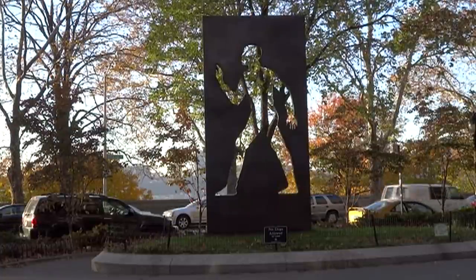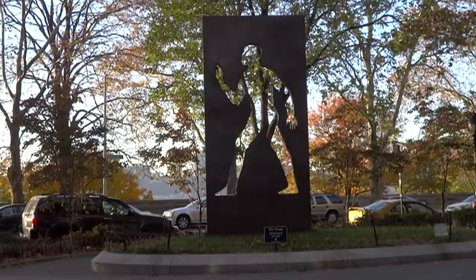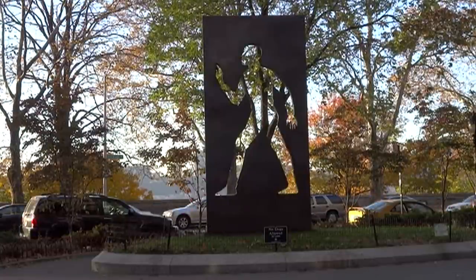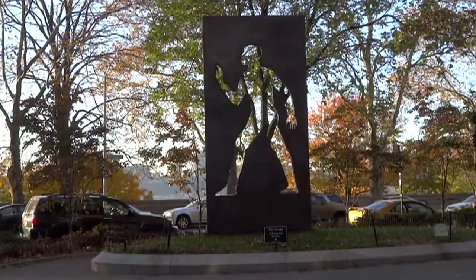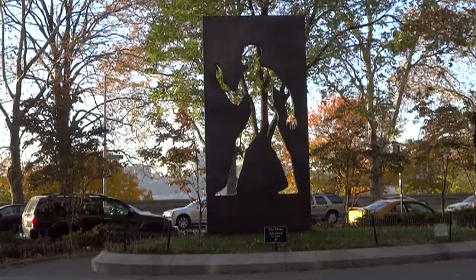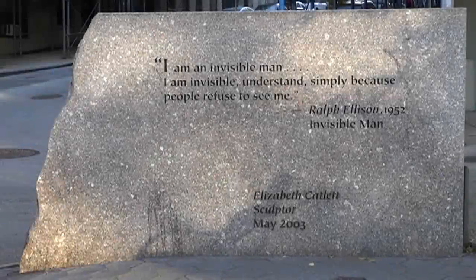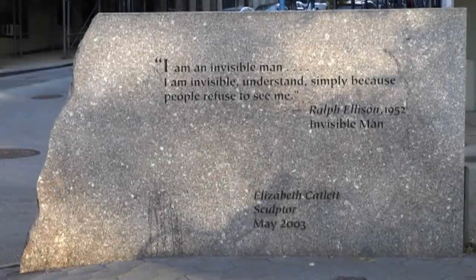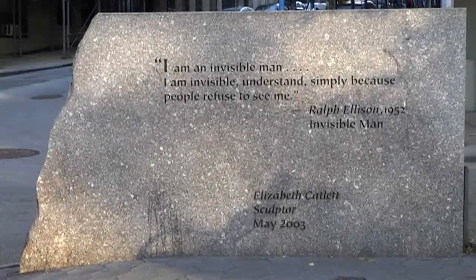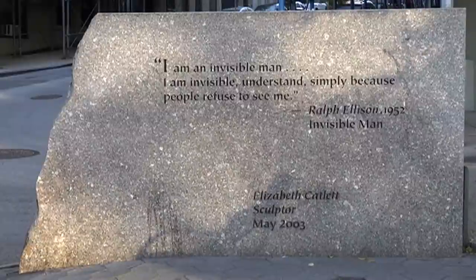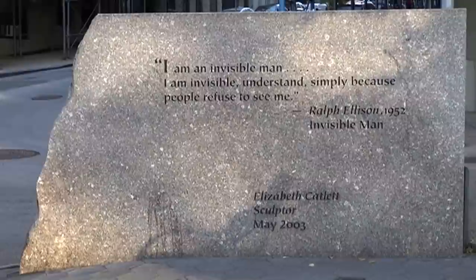The image refers to the main character from a novel written by African American novelist Ralph Ellison. Ellison wrote this novel in 1952 and the title is Invisible Man. Invisible Man is also the name of this work. In the 1952 novel, the unnamed protagonist is an African American man who thinks himself invisible because everyone perceives him as a stereotype.